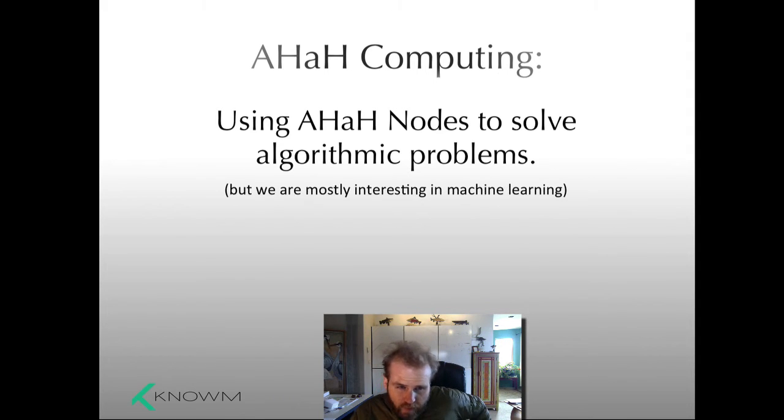Now, first of all, we're mostly interested in machine learning tasks. We're not interested in solving every algorithmic problem out there. We're not interested in reinventing modern computing. We really came at this because we want to make very efficient learning systems. We want to solve the problems that brains solve, and that's what we're mostly focused on. But along the way, we discovered that AHA nodes are also logic functions, and because of that, we can do generic computation. Whether or not it's useful, we don't know. Again, we're interested in machine learning.